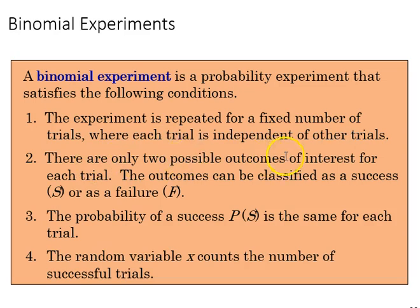There are only two possible outcomes that we can define as success or failure, and the probability of success is the same for each trial, and that's related to the fact that they are independent. Random variable X counts the number of successful trials.